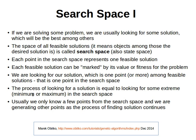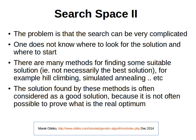The process of looking for a solution is equal to looking for some extreme point — maybe a minimum or maximum — in the search space. A minimum means there's no point lower than that; a maximum means there's no point higher than that. Usually we only know a few points from the search space and we generate other points as the process of finding a solution continues. We don't know all the possible solutions, but we know a few of them and can generate the others as the process continues.